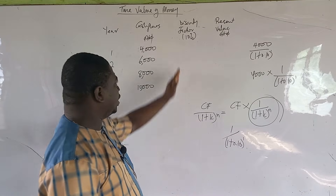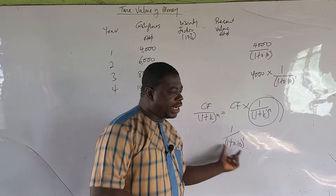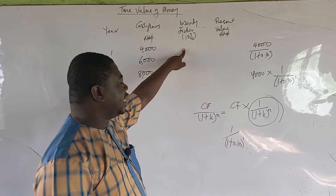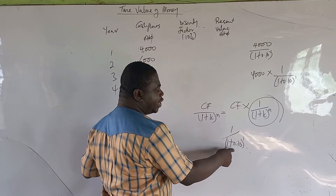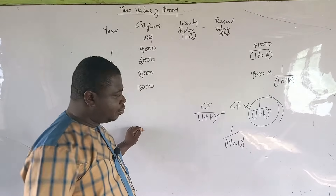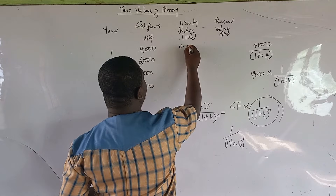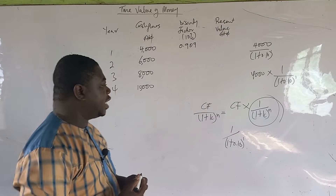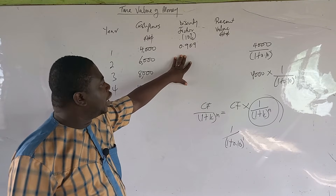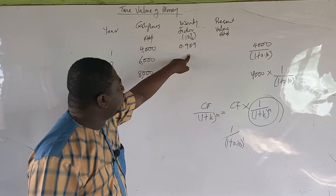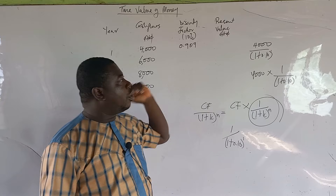If you don't have a present value table, just use the calculator approach. For year one, punch 1 over (1 + 0.10) raised to the power one and the answer is 0.909. This is the discounting factor for year one. When you multiply 0.909 by the cash flow of 4,000, you should get the same present value as in the previous solution.